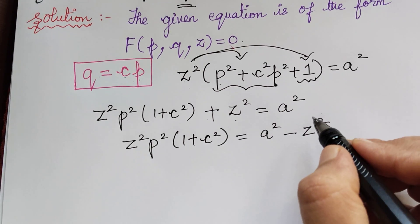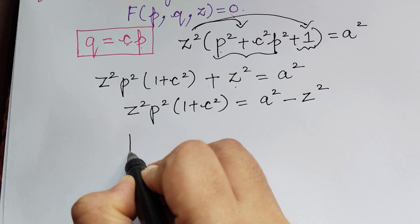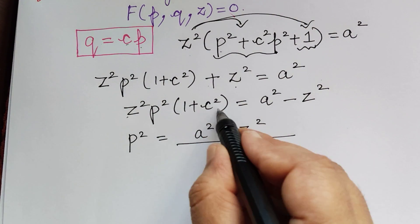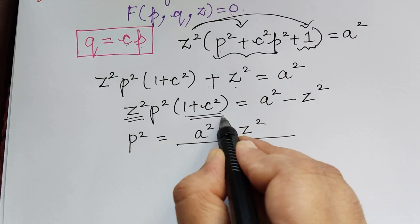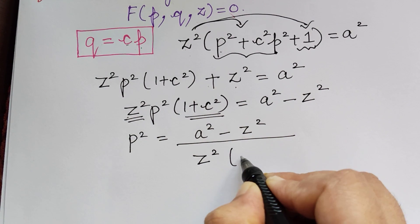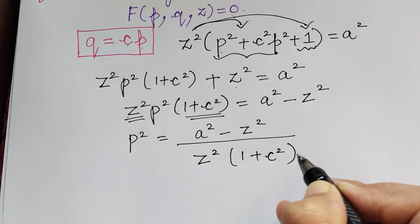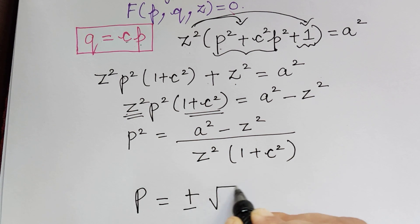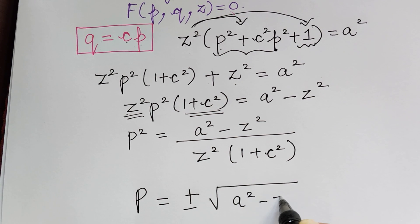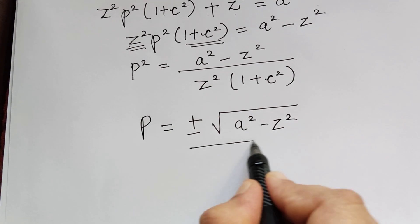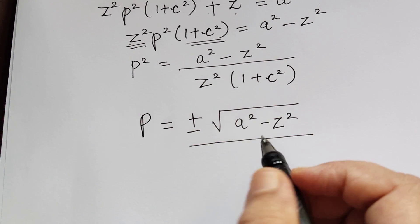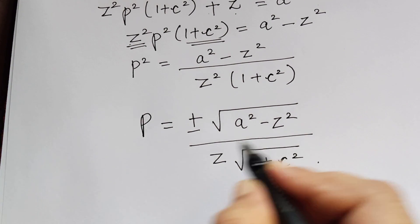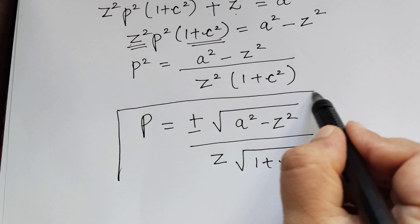Taking z squared to the right it becomes negative, so p squared equals (a squared minus z squared) divided by z squared multiplied with (1 + c squared). Therefore p equals plus or minus the square root of (a squared minus z squared), divided by z multiplied with the square root of (1 + c squared).